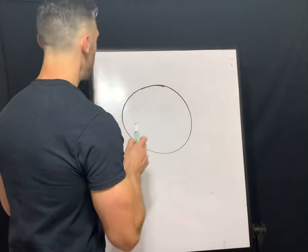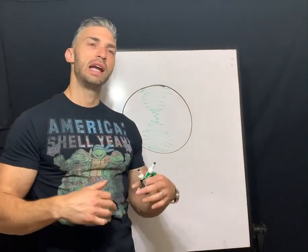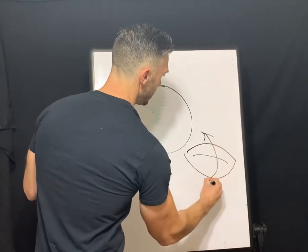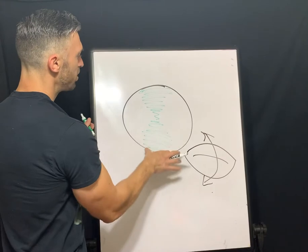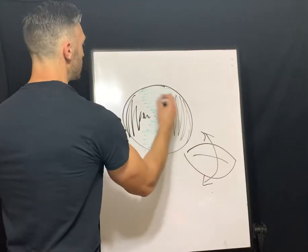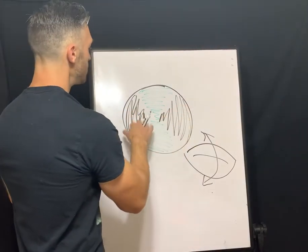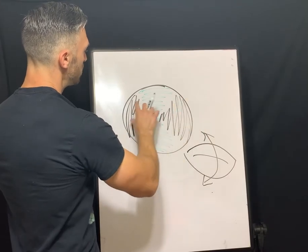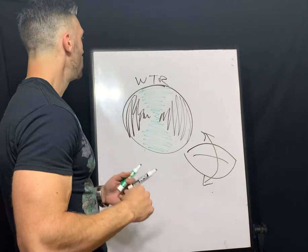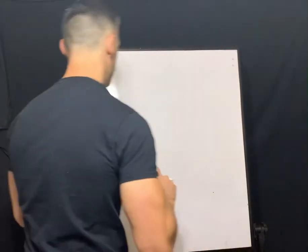A very common pattern you'll encounter is with-the-rule astigmatism. If you have a spherical gas permeable lens over an exaggerated with-the-rule cornea — where the steep meridian is vertical, like a football on its side — pooling appears where it's steeper. You'll get what's called the dumbbell effect, with bearing on the cornea in the horizontal meridian. We do not want any excessive pooling or bearing.